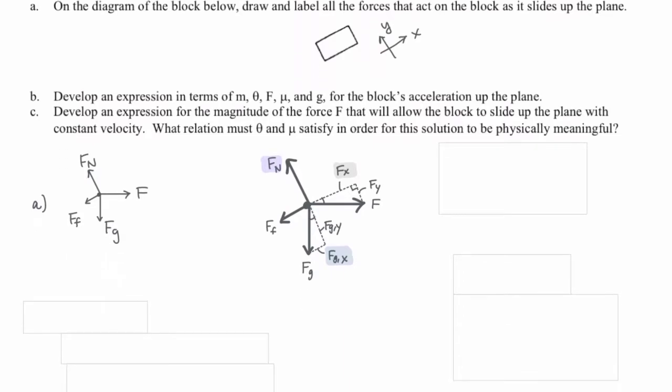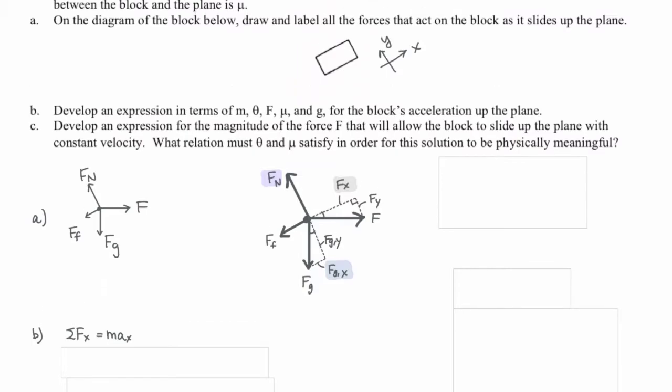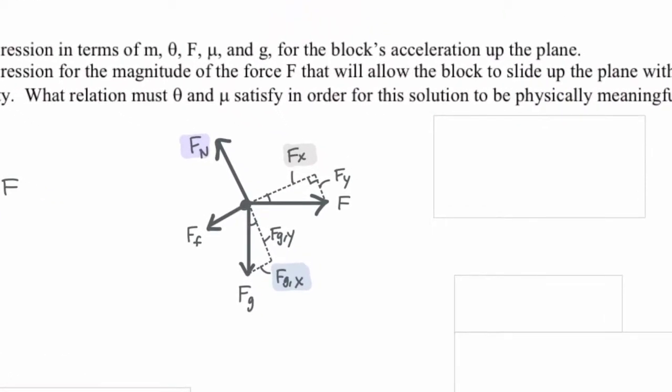We need to write out Newton's second law because that's how we're going to actually solve for acceleration. The sum of all forces in the x-direction equals mass times acceleration in the x-direction. It looks like we've got three forces acting in the x-direction: the force of friction, the force applied, and the force of gravity.